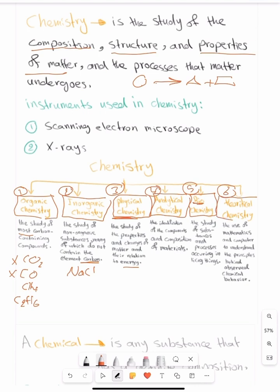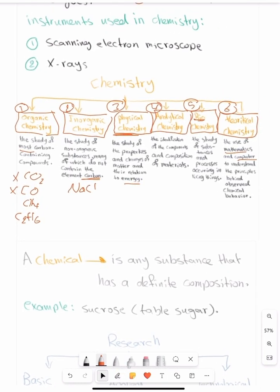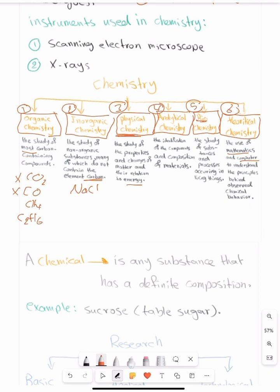The last one, which is theoretical chemistry, is the use of mathematics, numbers, and computers, how to process them, to understand the principles behind observed chemical behavior. Which is more commonly used in research. So all of these were classes of chemistry. You have to memorize them. At least memorize their names and know the differences between all of them.